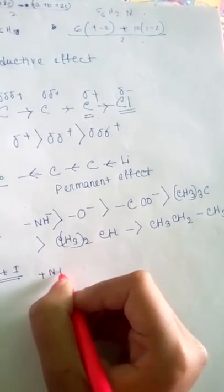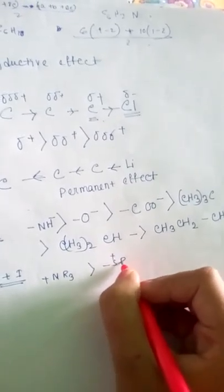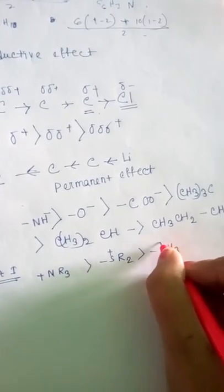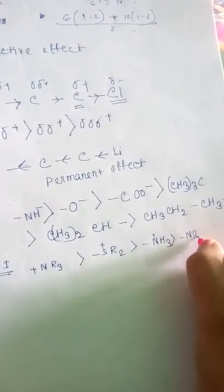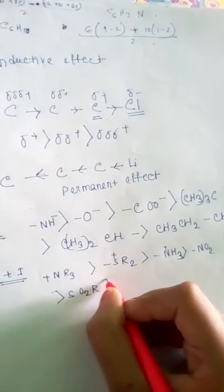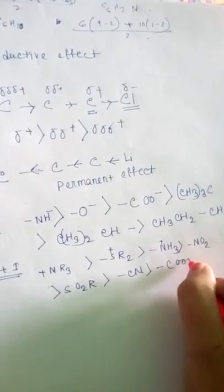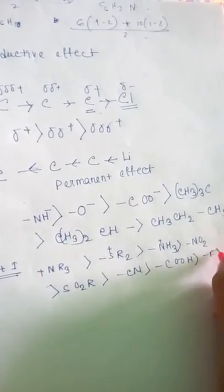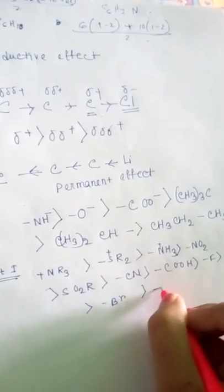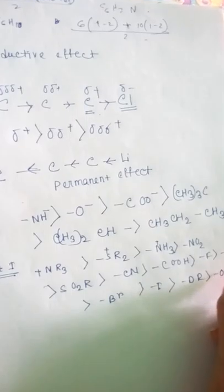Minus-I effect groups include: plus-NR3, plus-SR2, plus-NH3, NO2, SO2R, CN, COOH, fluorine, chlorine, bromine, iodine, OR, and OH.